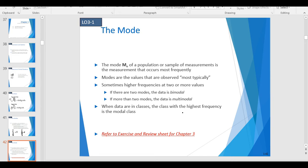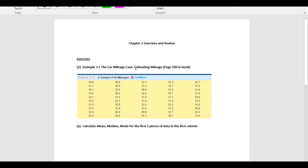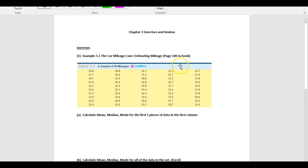Right now we're going to go to the review sheet. So, flip to your review sheet. We have the car mileage case, which is page 100 in your book. And what we're going to do is we're just going to go through this review sheet here. We're going to go through A. And it says, calculate the mean, median, mode for the first five pieces of data. So, the first five pieces of data in the first column are these pieces right here. And this is a sample.